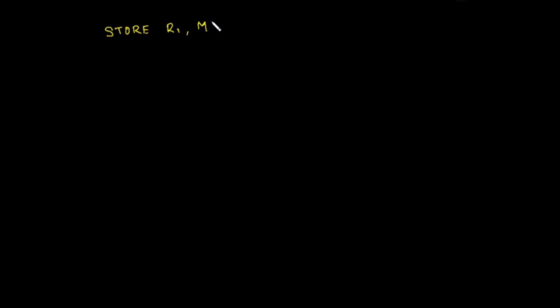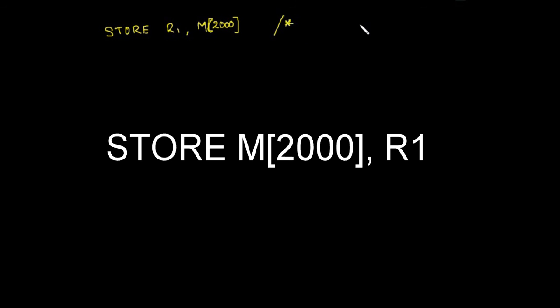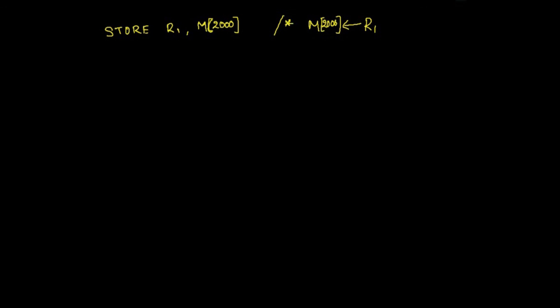Now let us look at another data transfer instruction that stores data from a register into memory. Until now we fetched data into the processor; now we will store data from the processor into main memory. The instruction is: store r1, m[2000], which stores the value in register r1 into memory location 2000. We call it 'store' because we are the processor and we are storing a value from our side to the other side.